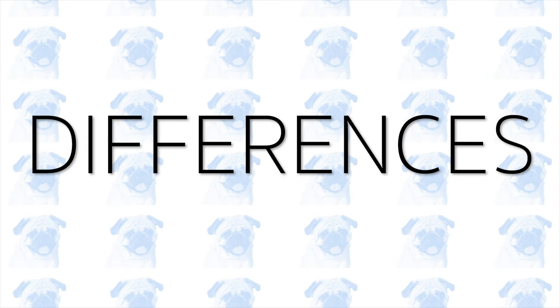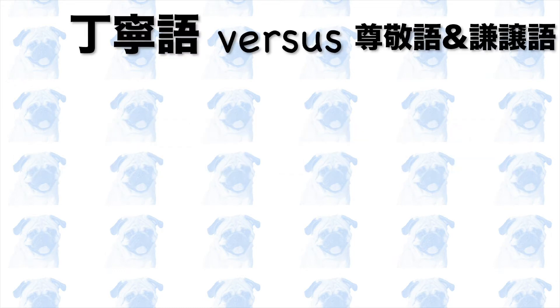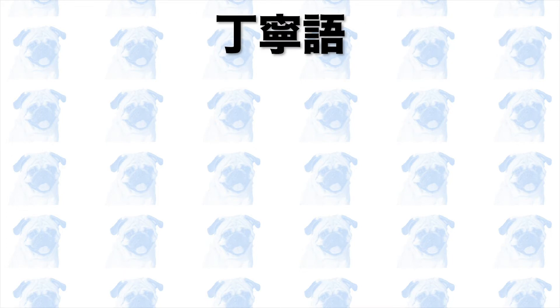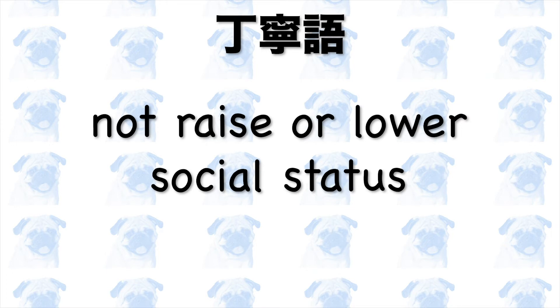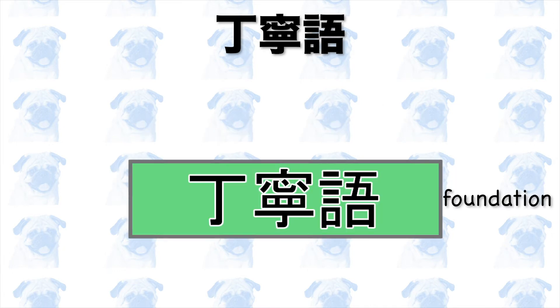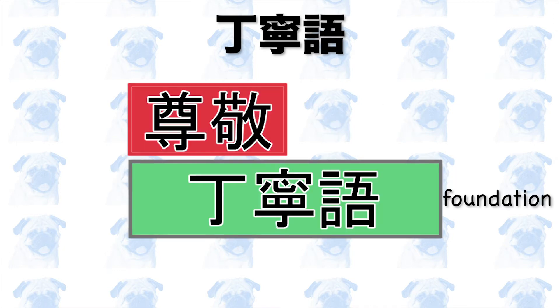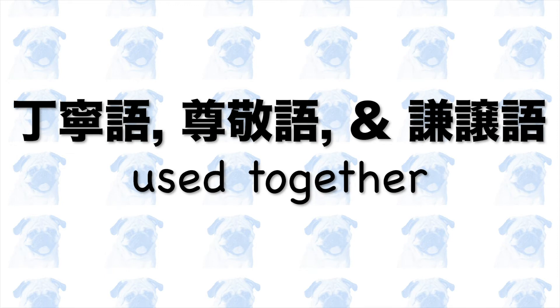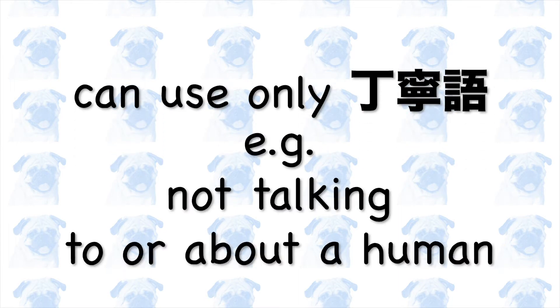Differences. We now move on to the differences. Firstly, let's contrast teineigo and the other two types of keigo. Teineigo differs from the other two types in that it does not raise or lower anyone's social status. Rather, its function is to lay the foundation for a pleasant, polite conversation for everyone involved. Most importantly, the use of teineigo is a necessary condition for politeness, and on top of this foundation, we add sonkeigo and kenjougo in order to clarify different social statuses. Although the three types are usually used together, it is possible to use only teineigo if you are not talking to or about any particular individual — for example, writing a blog post about amphibians, ending sentences with desu and masu.